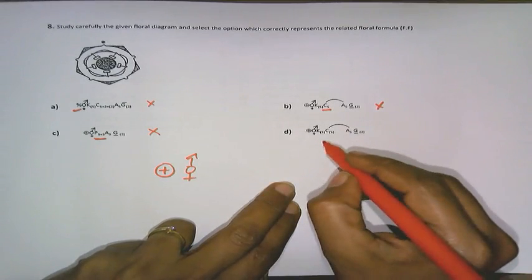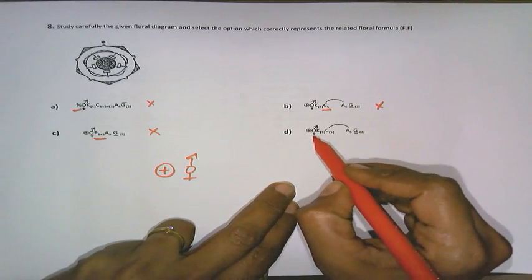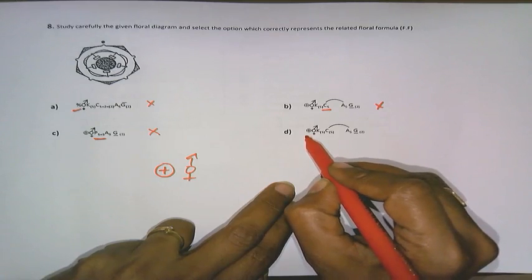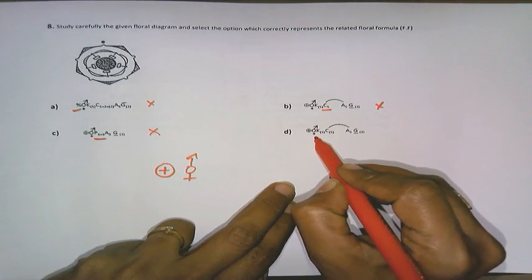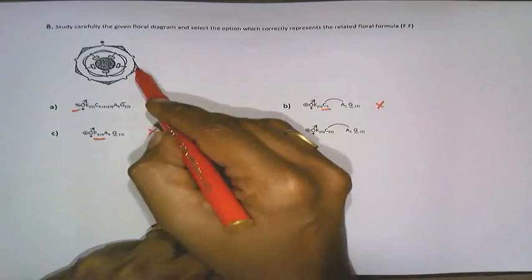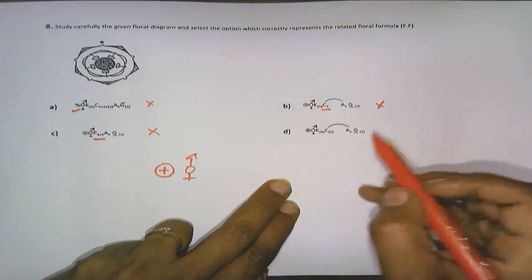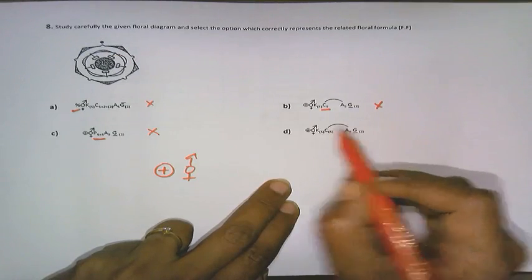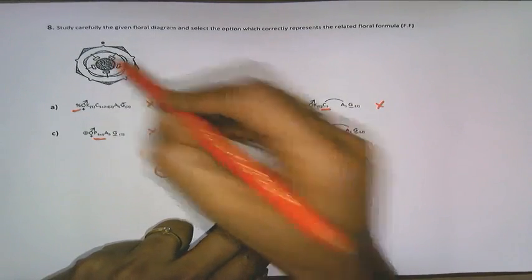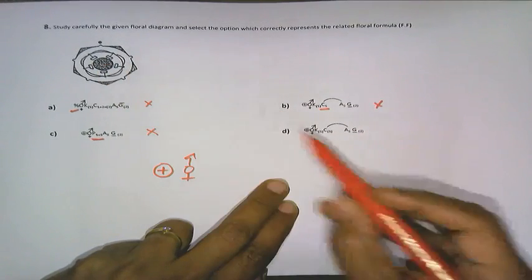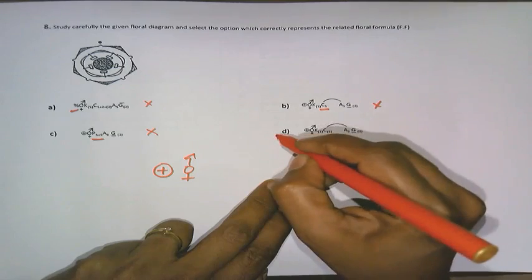So we come to the last option, that is option D, which is right. That is, it is a flower which is actinomorphic, which is a bisexual flower. Calyx in a fused condition, yes the sepals are fused. Corolla in a fused condition, yes the petals are fused, which is joined to the androecium. And gynoecium which is superior with two locules. So our option is option D.